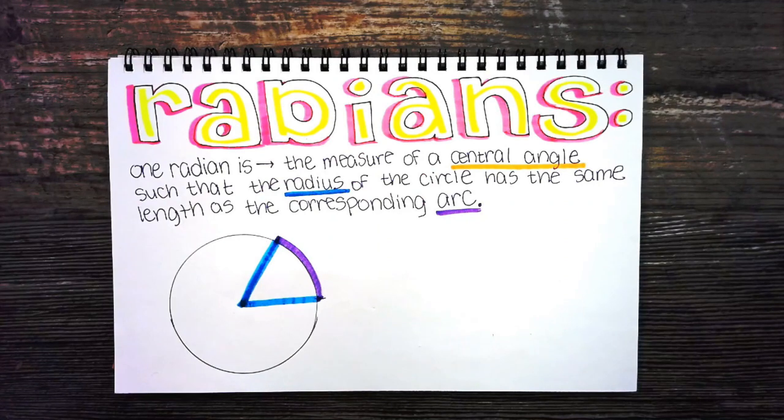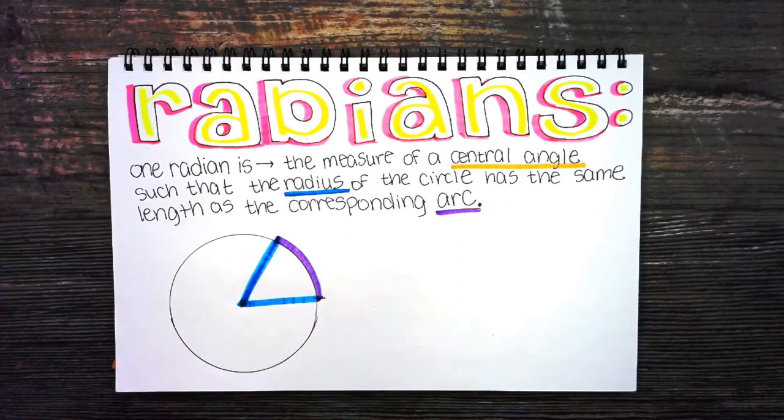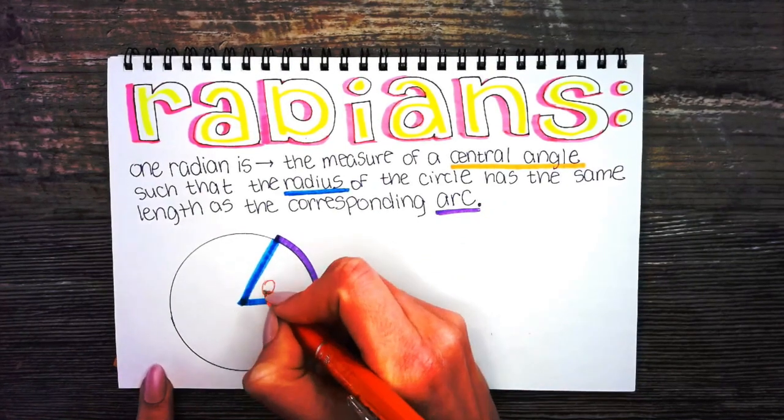The central angle is an angle whose vertex is located at the center of a circle. Here is the central angle theta.